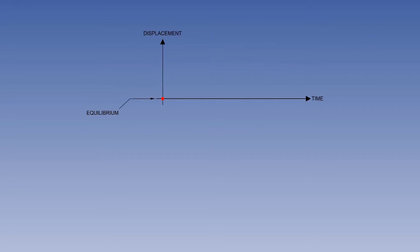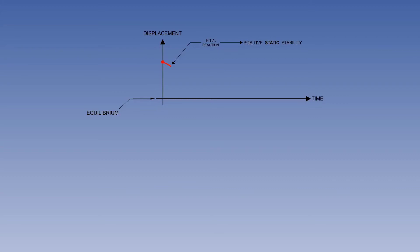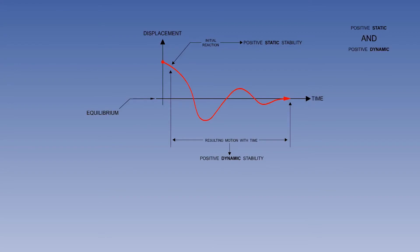Another type of dynamic stability is called damped oscillation. The red dot is displaced from equilibrium, and when the disturbing force is removed, the initial reaction is to start back towards equilibrium. This illustrates positive static stability. Over a period of time, the dot continues to move back to equilibrium with several oscillations, illustrating positive dynamic stability. We have positive static and positive dynamic stability.